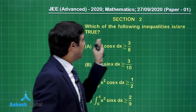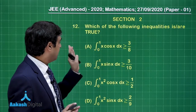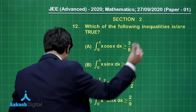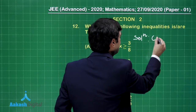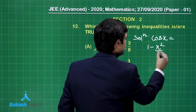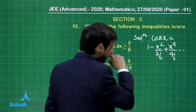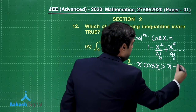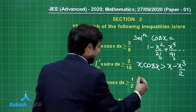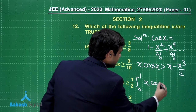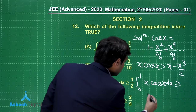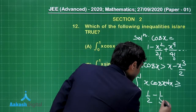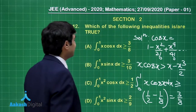Moving on to question 12: which of the following inequalities is true? Four options involve definite integrals from 0 to 1 of x·cos(x), x·sin(x), x²·cos(x), and x²·sin(x). We know cos x = 1 − x²/2! + x⁴/4! − ... Multiplying by x gives x·cos(x) > x − x³/2. Integrating from 0 to 1: ∫x·cos(x)dx > [x²/2 − x⁴/8] from 0 to 1 = 1/2 − 1/8 = 3/8. So option a is correct.